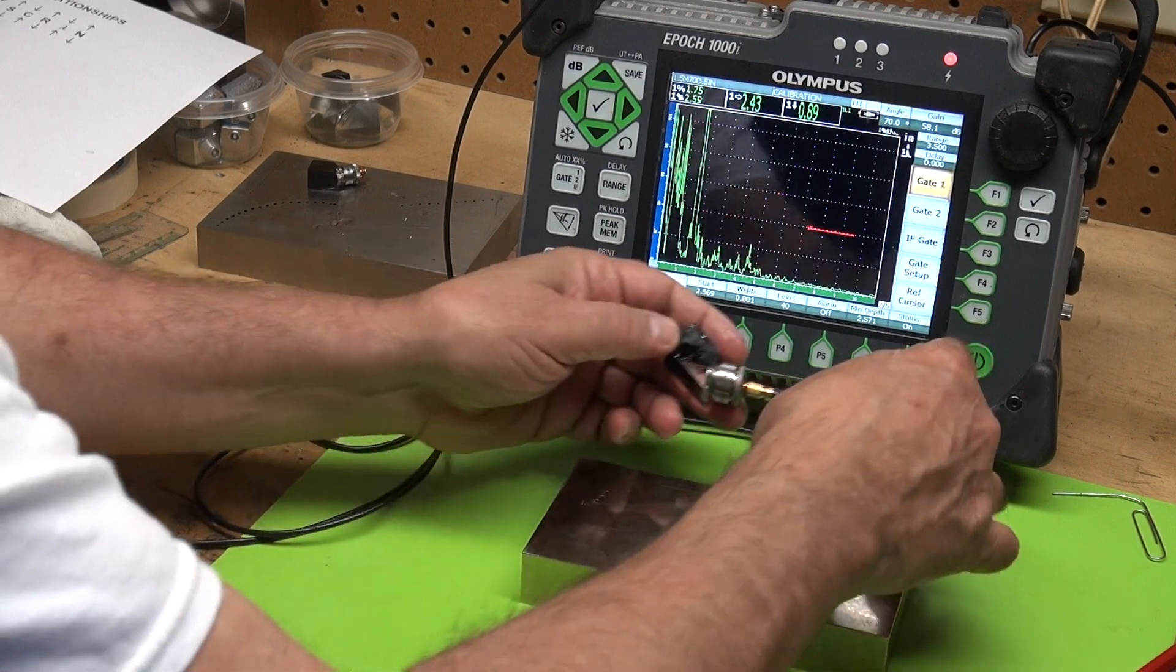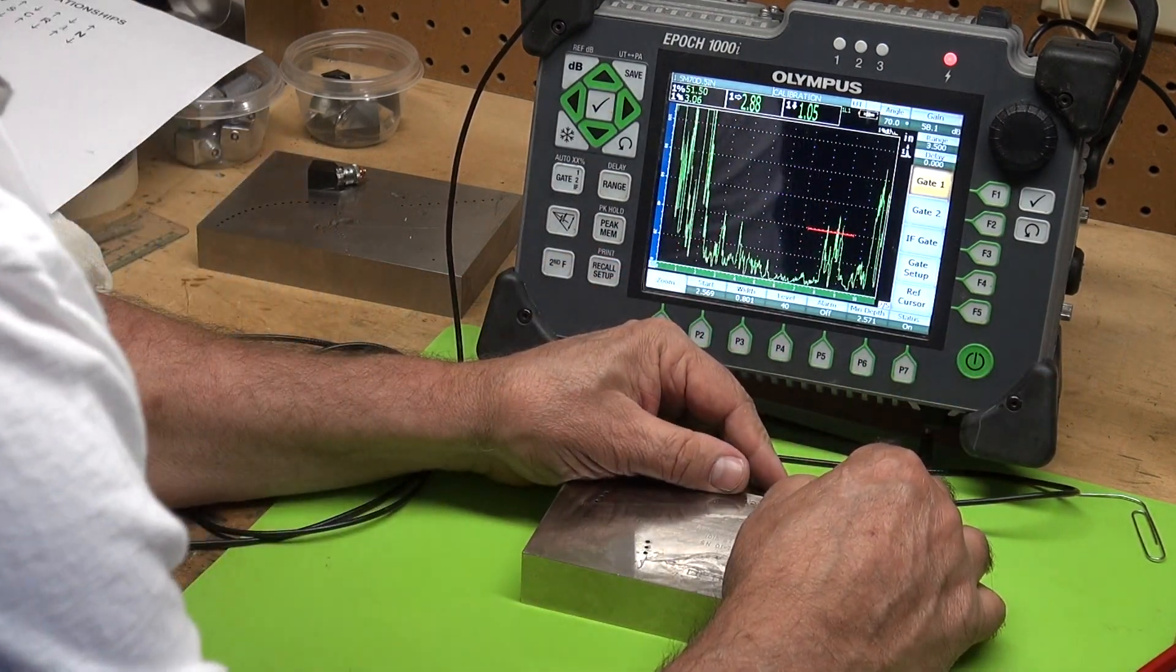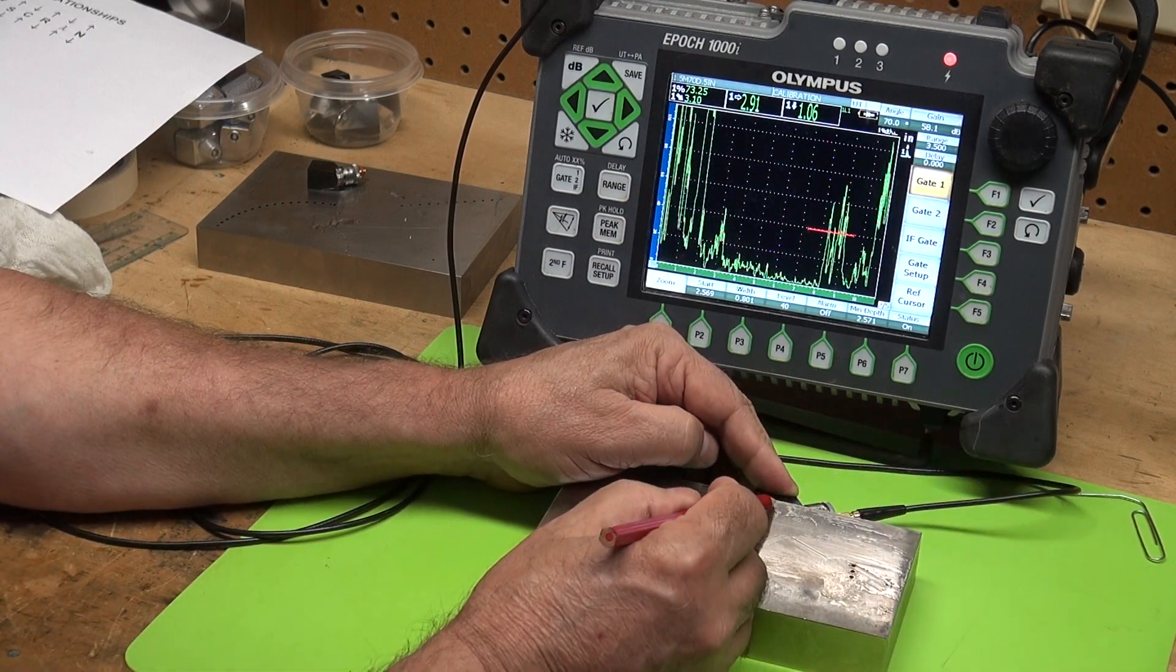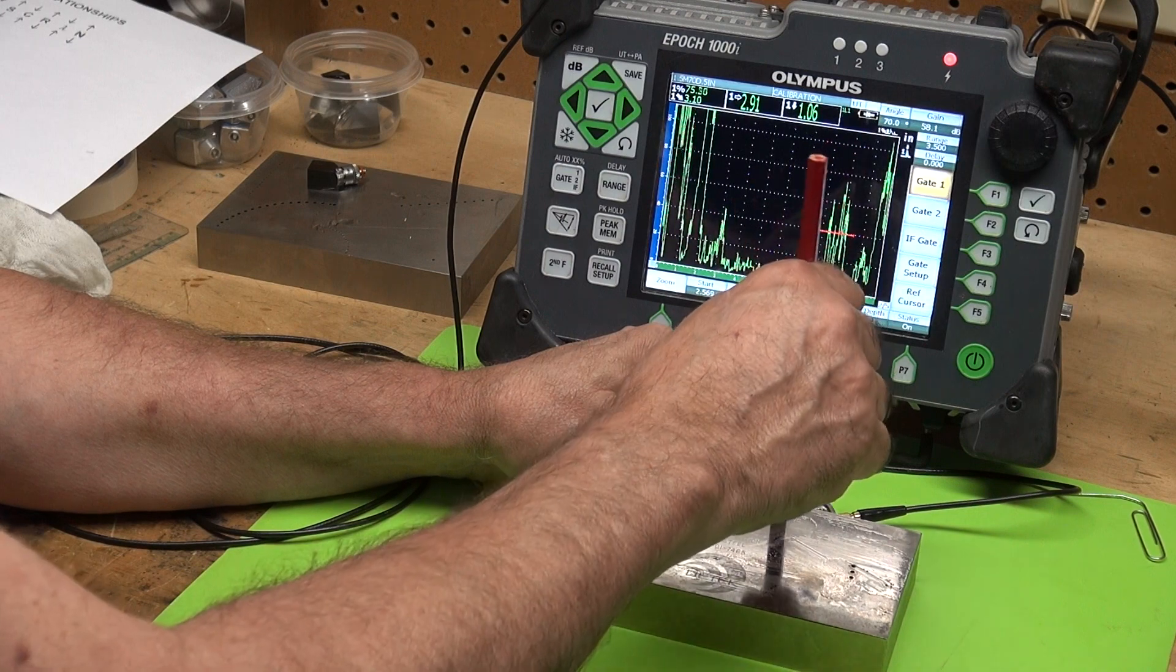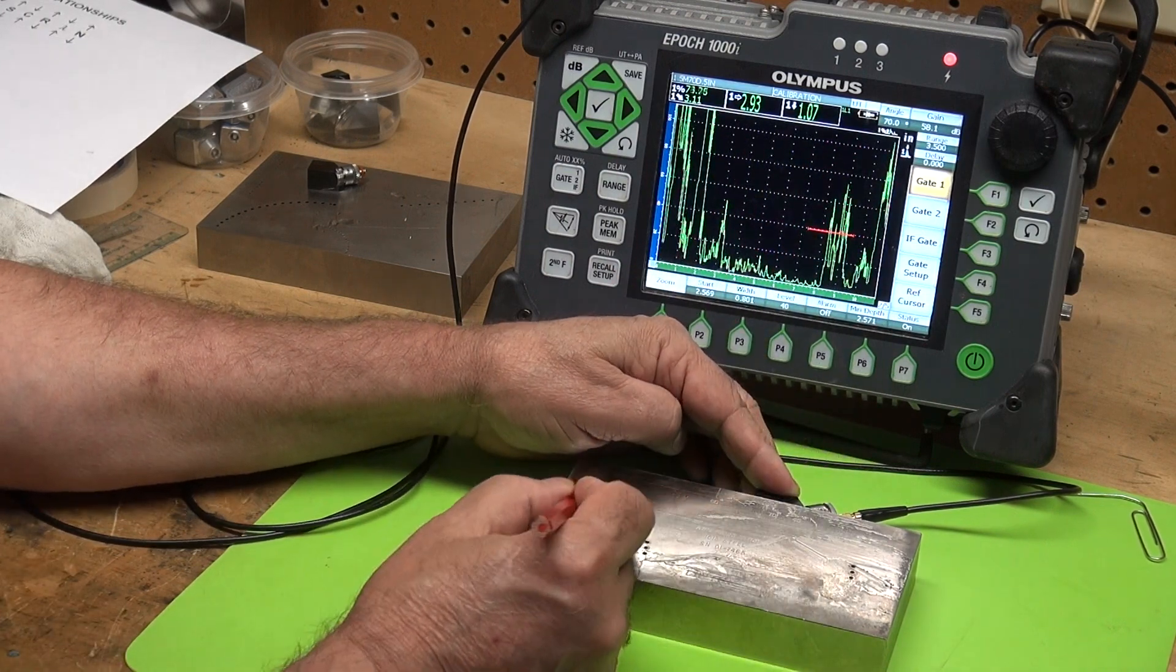And what I do is I'm going to place my beam index point right on that 70. So that my beam index point is sitting right there. 70 degrees, beam index point to the one and a half megahertz transducer shooting at these three holes here.